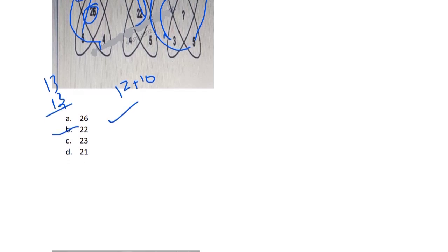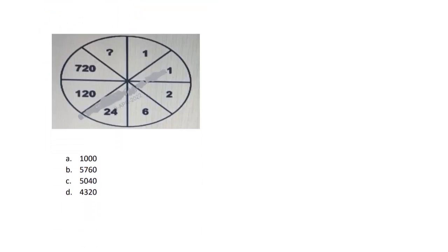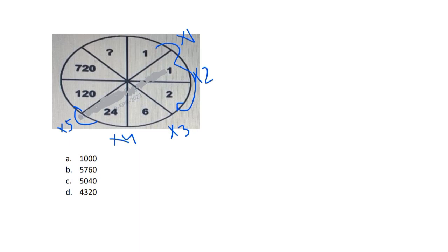The next question follows a pattern we have solved many times in our videos — three to four questions on the same pattern. You can see: 1×1=1, 1×2=2, 2×3=6, 6×4=24, 24×5=120, 120×6=720. So the next step is 720×7, which gives 5040. Looking at the options, multiplying by 7: if any option ends inconsistently with this product you can eliminate it. Option D and option B can be ruled out, leaving the correct answer.